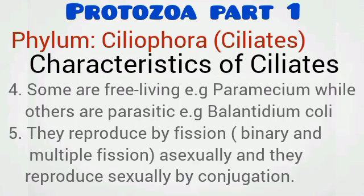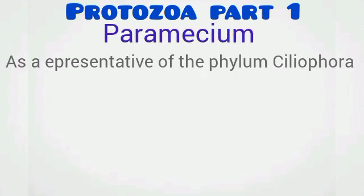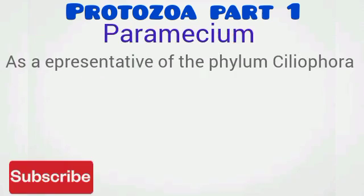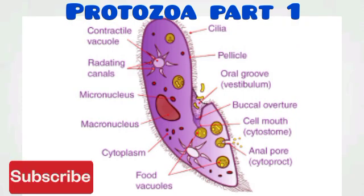Some ciliates are parasitic while others are free-living. An example of a parasitic one is Balantidium coli, while the free-living ciliate is Paramecium. They reproduce by binary fission, multiple fission, and asexual reproduction, while sexually they carry out conjugation. Let's take a look at Paramecium as a representative of the phylum Ciliophora.